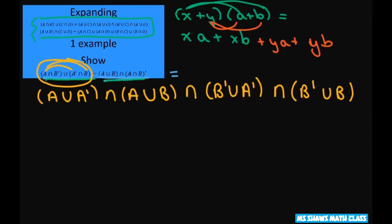So simplifying further, anytime you have A or A prime, that means everything. So that's your universal set. We also have it here. That's your universal set.